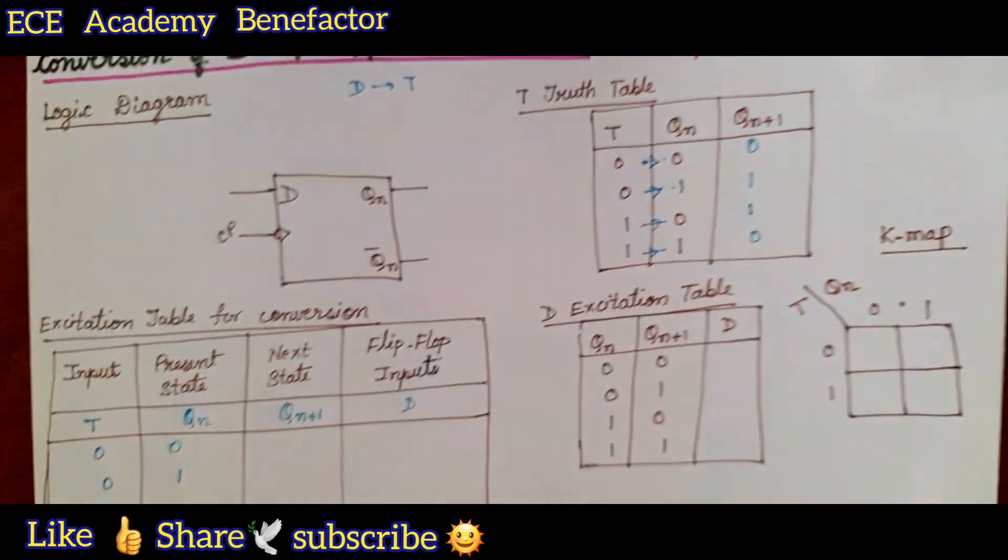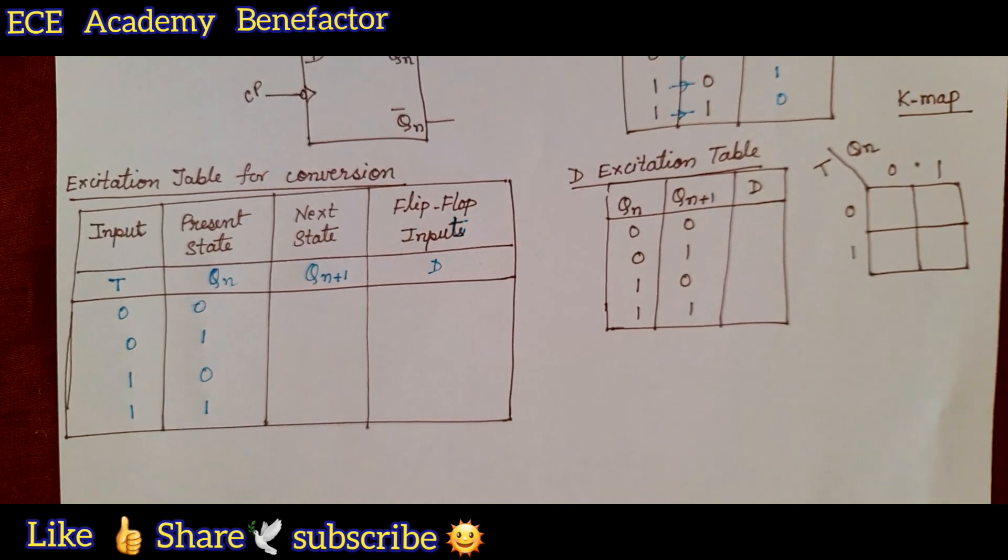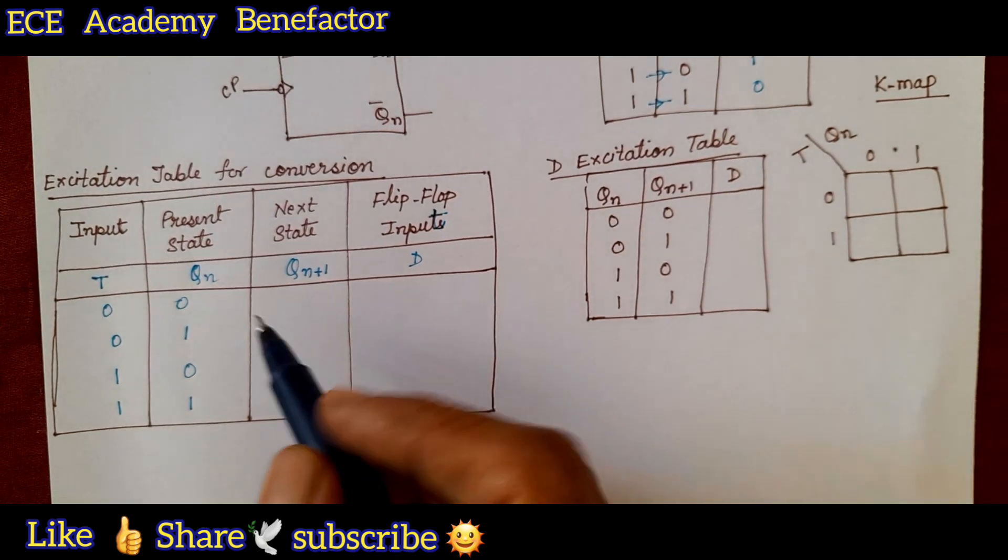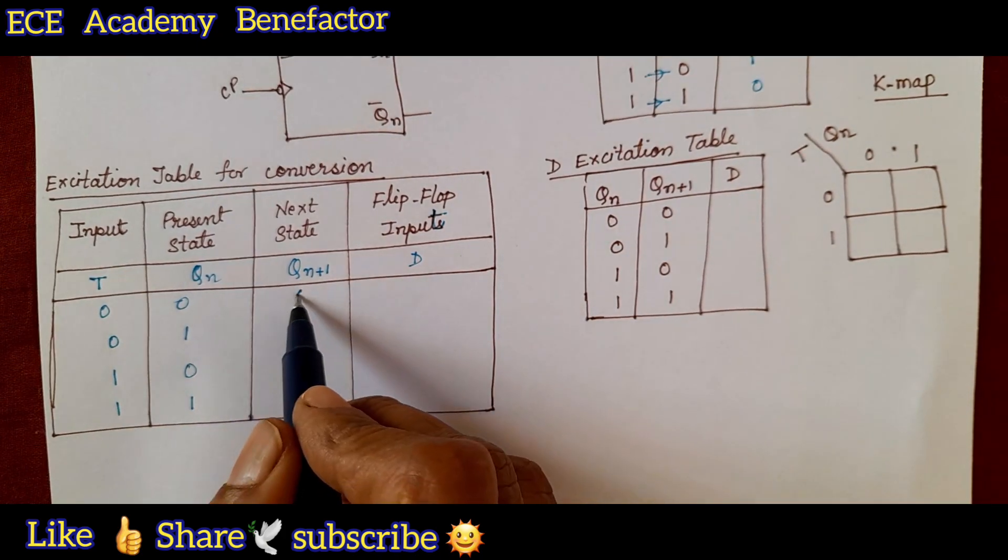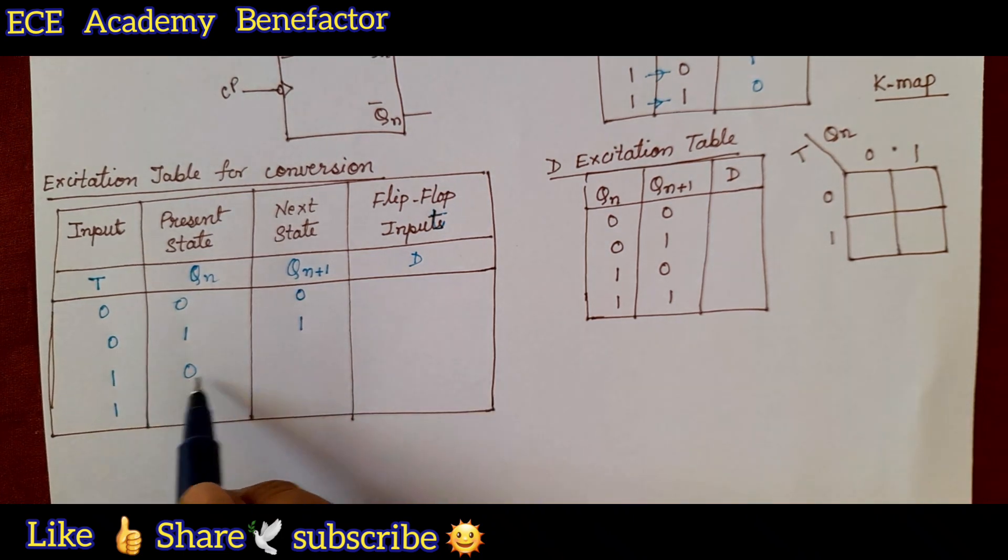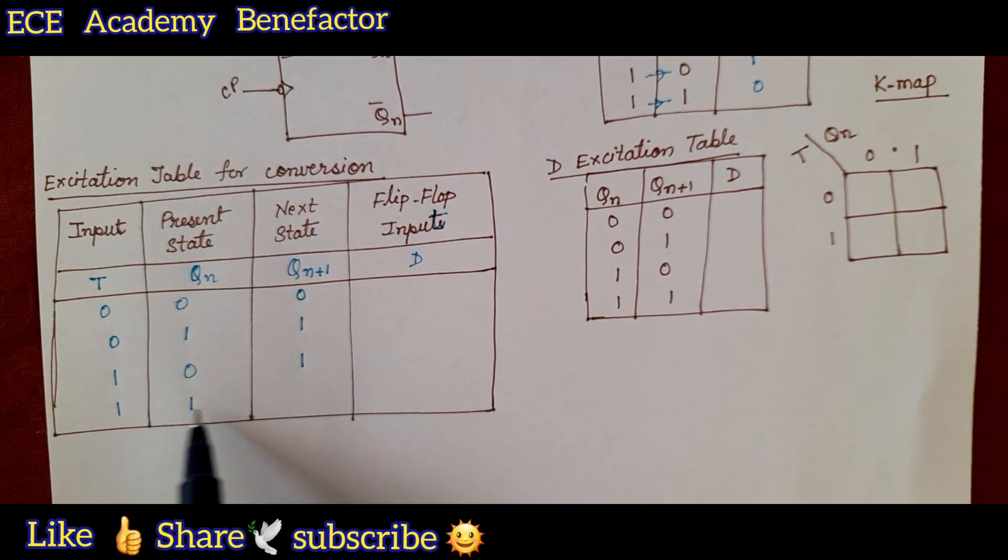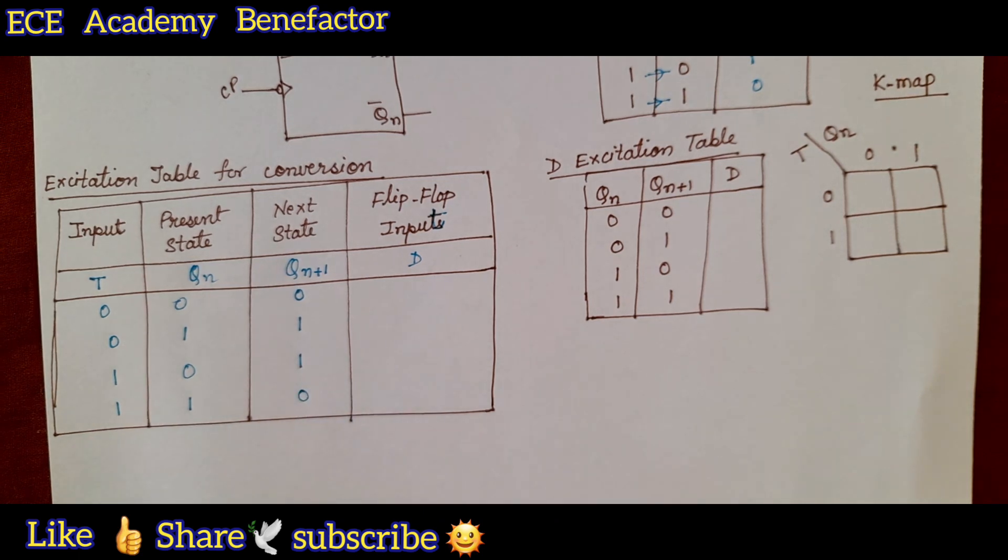T truth table is easy to remember. It is same as your XOR gate 0, double 1 0. We can write it here the truth table of T flip-flop. What it is 0 to 0 no change 0, 0 to 1 1, 1 to 0 1, 1 1 no change so 0.